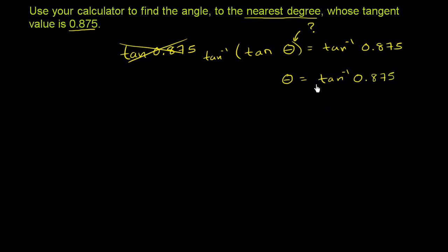And if you're in degree mode, this is going to return an angle in degrees. If you're in radians mode, it'll return an angle in terms of radians. But let's figure this out using our calculators.